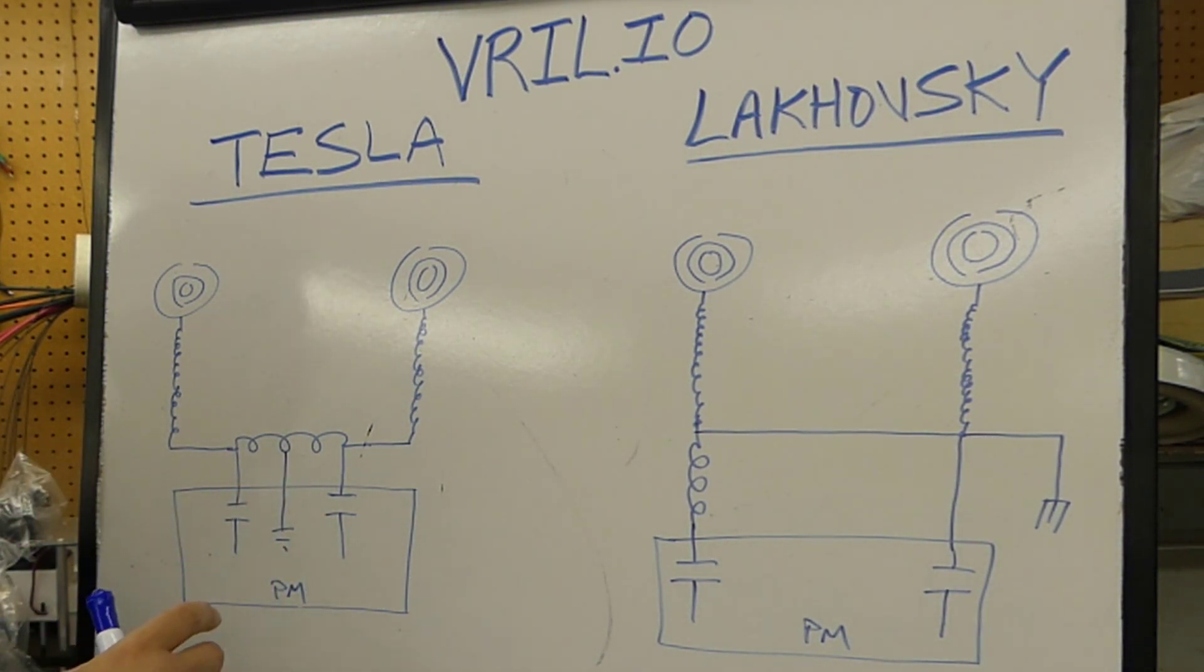When you have the spark gap, these bursts are creating additional radio frequencies which are also part of the method. In any case, these two capacitors are alternating really rapidly at very high frequency back and forth at high voltage. Whatever the voltage is of the high voltage transformer inside the unit, they can be between perhaps 6,000 maybe at minimum,